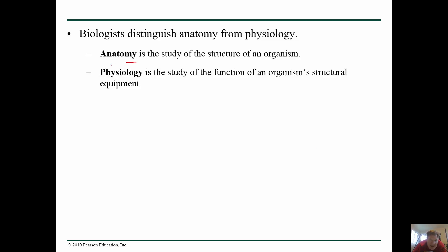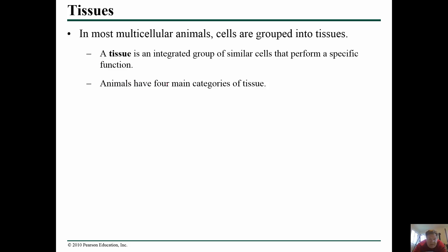Anatomy is basically the study of the structure of an organism. Physiology is the study of the function of the organism's structural components — in anatomy you're just knowing what the thing is, and in physiology you're learning what it does. A tissue is an integrated group of similar cells that perform a specific function.